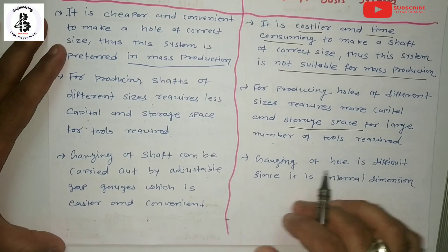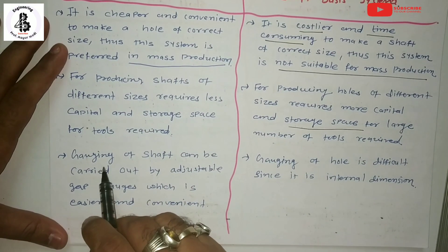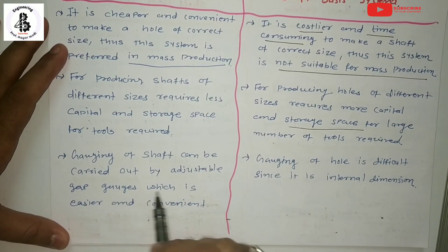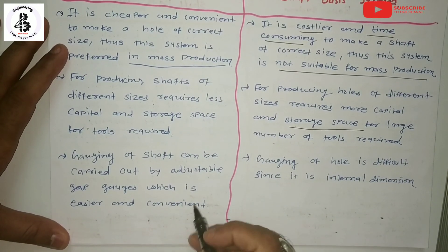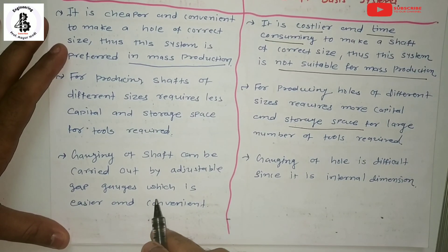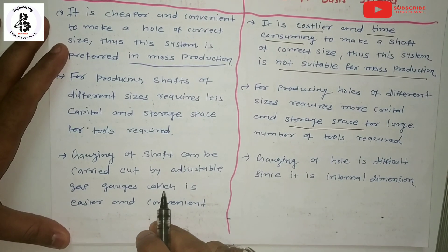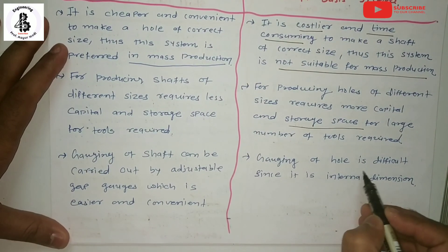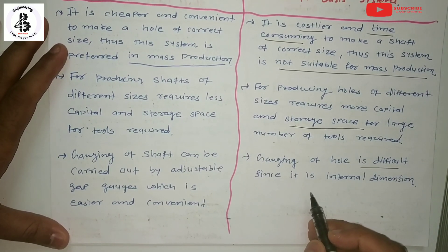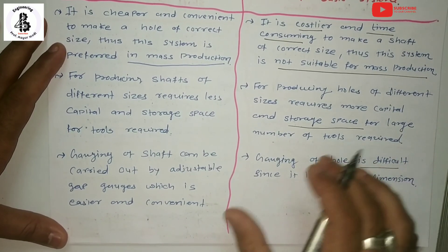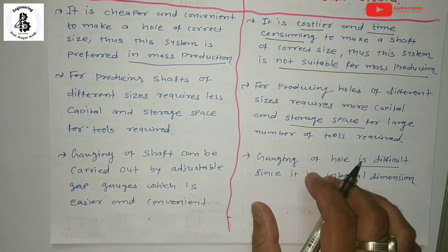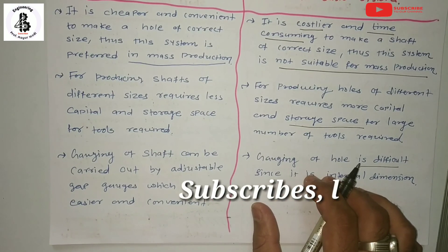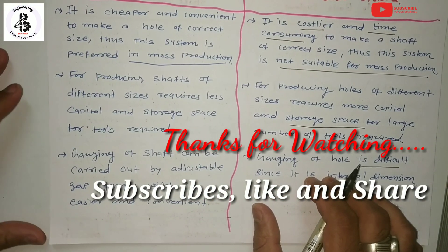For hole basis systems, gauging of the shaft can be carried out by adjustable gap gauges, which is easier and more convenient. For shaft basis systems, gauging of the hole is difficult since it is an internal dimension. That covers all the basic differences between hole basis systems and shaft basis systems. If you like this, please subscribe and share Modi Mechanical Engineering Tutorials. Thank you very much.